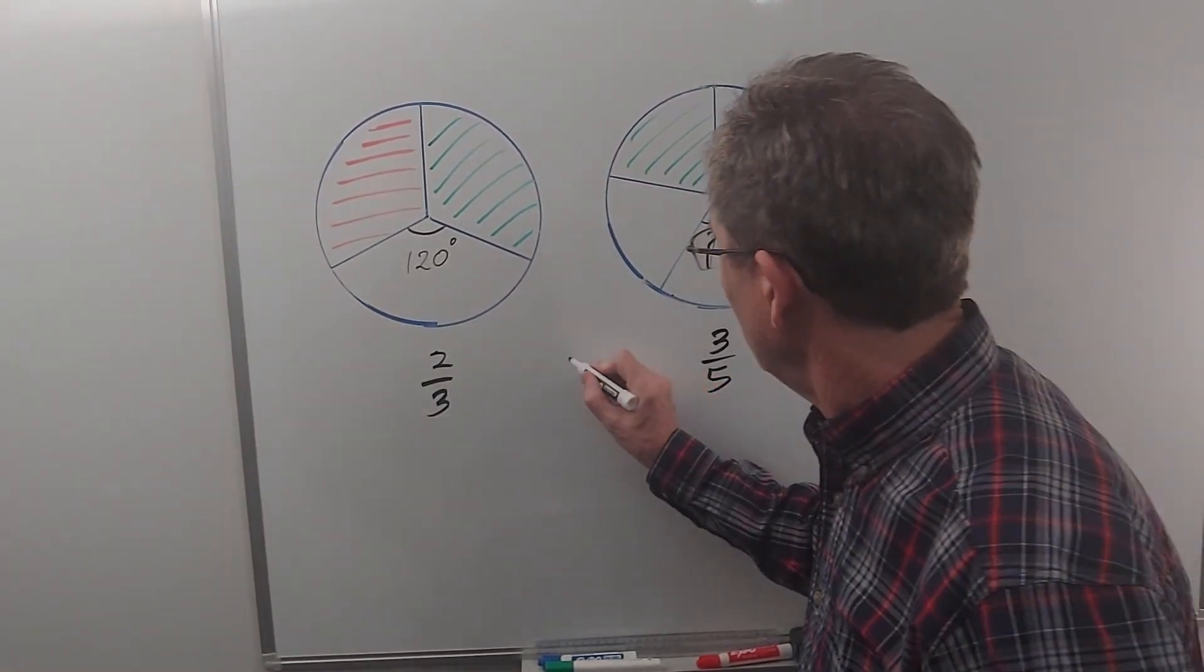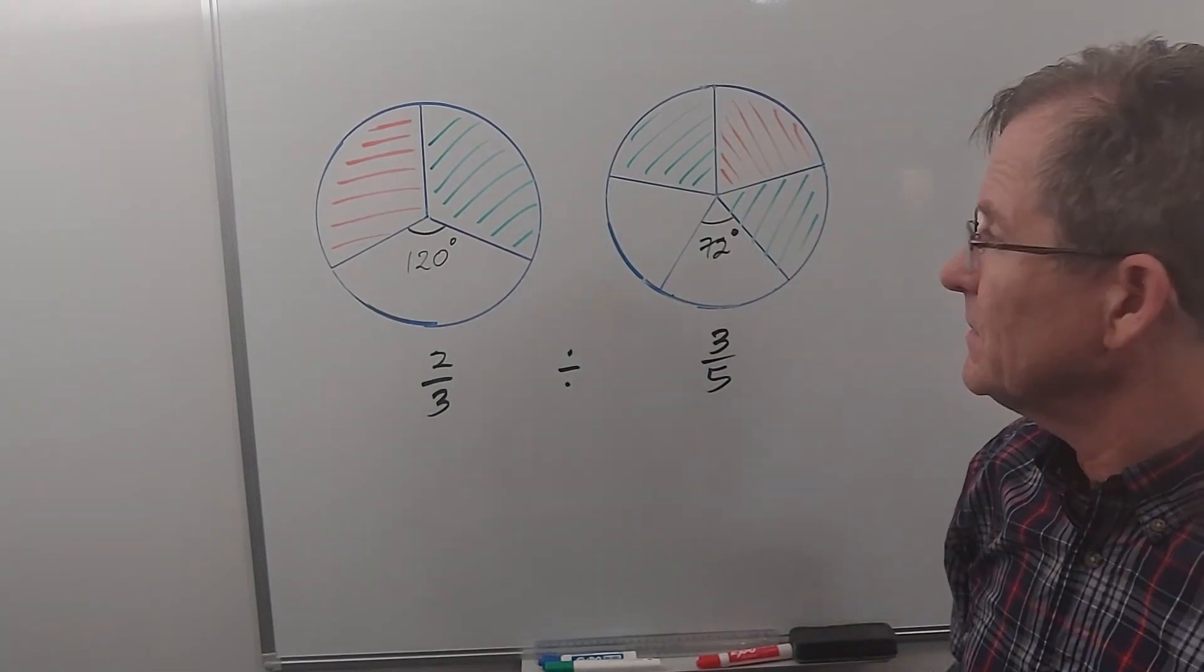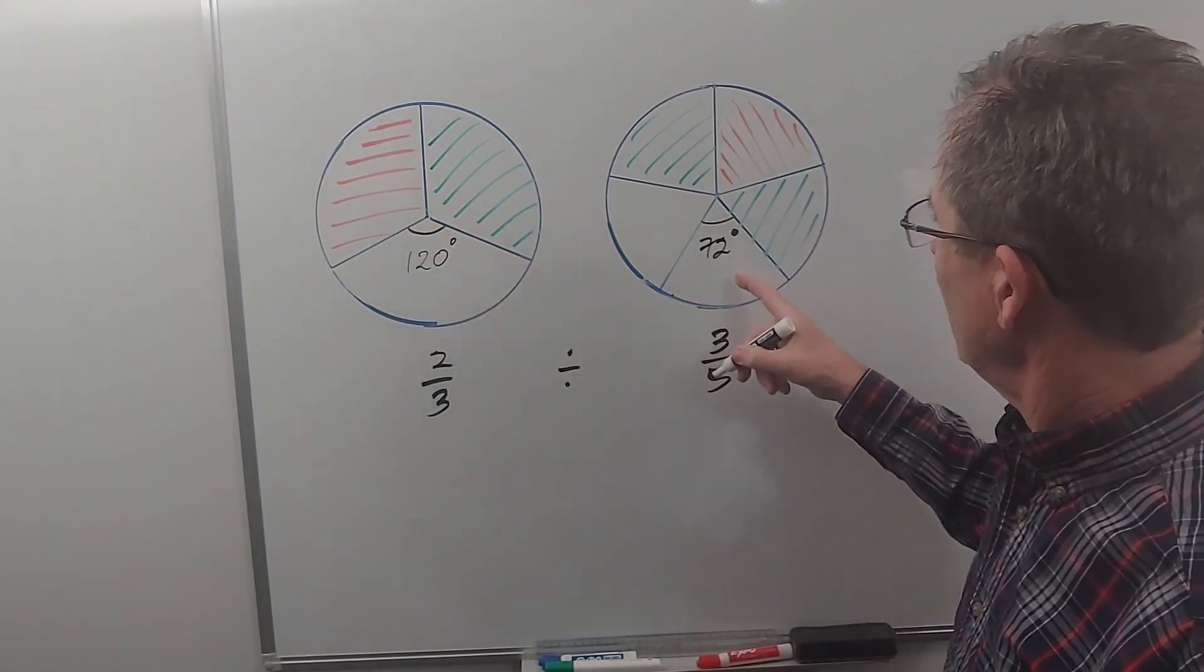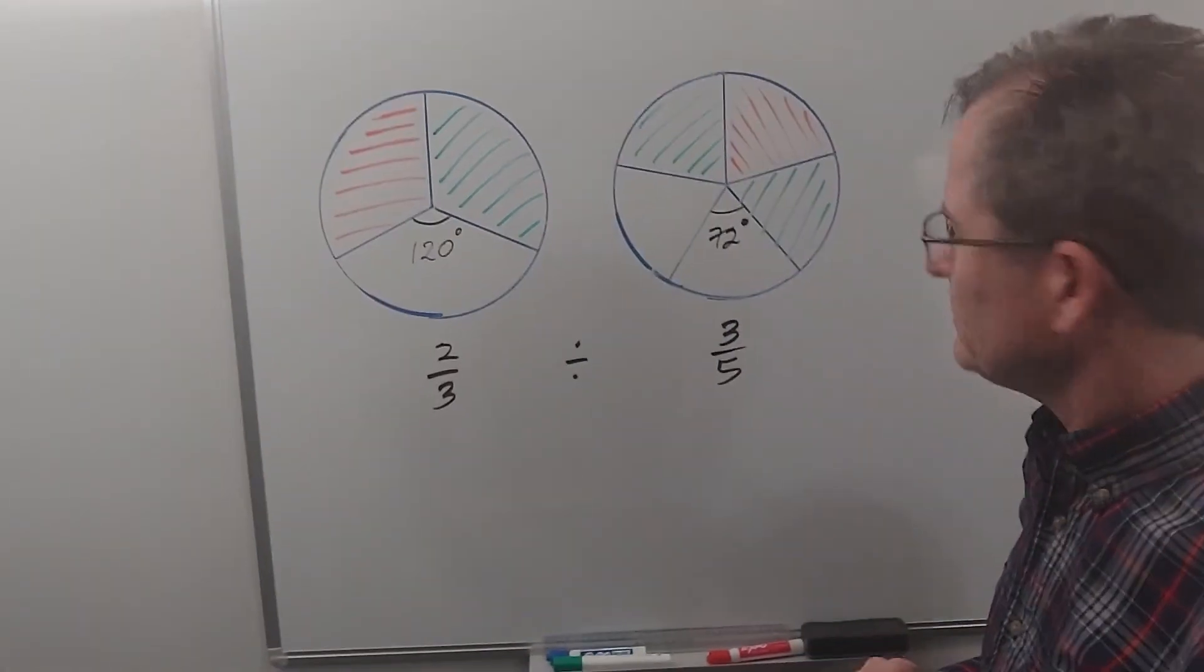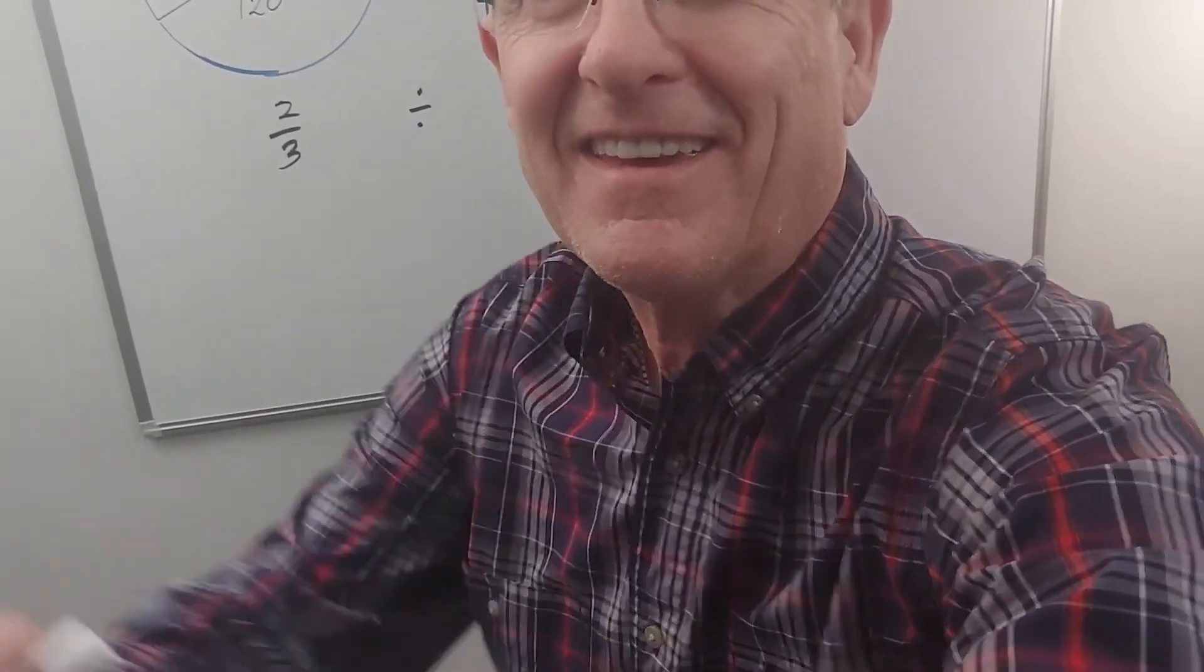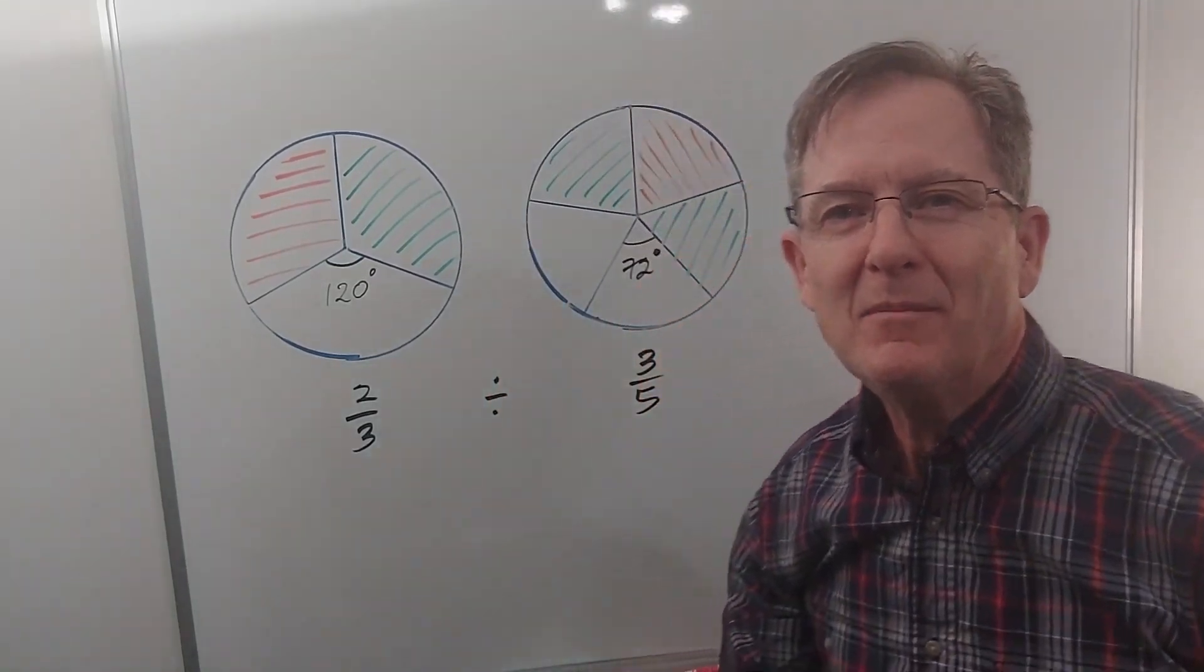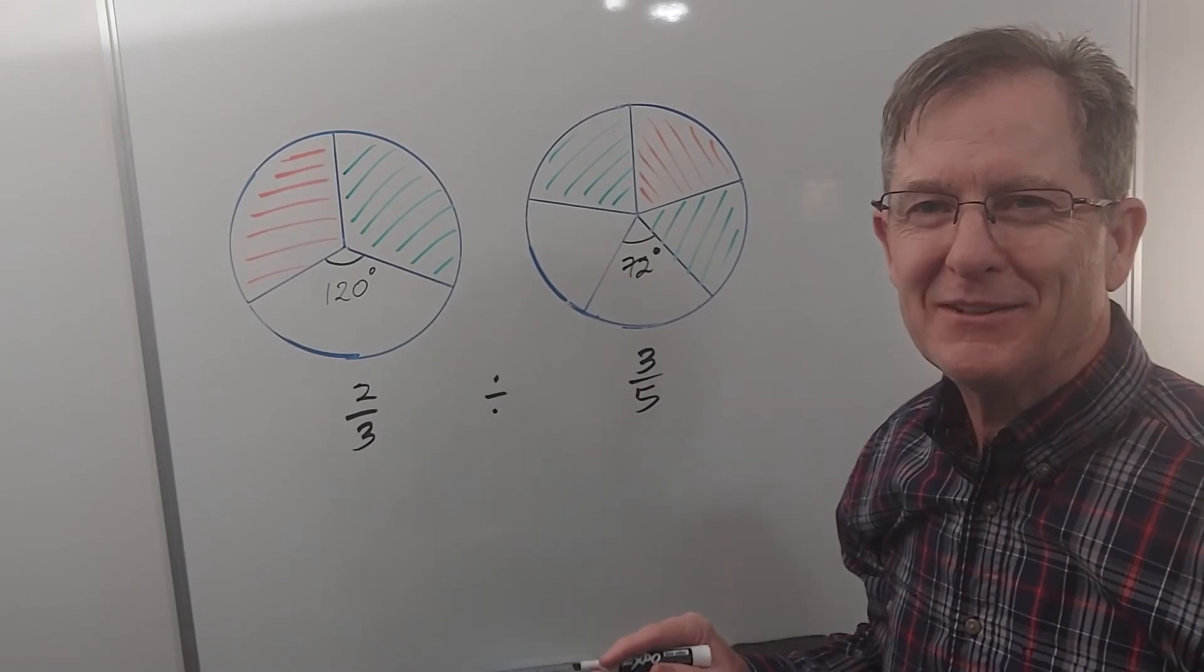So now instead of multiplying let's divide two thirds by three fifths. Here I have 240 degrees, here I have 3 times 72 which is 200 and whoa, the cat came back the very next day and almost destroyed my setup here. Too bad you couldn't see that.